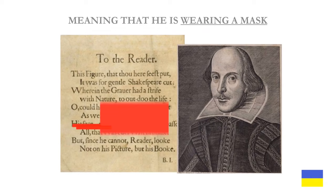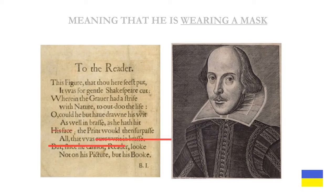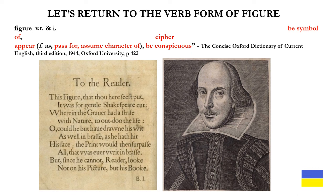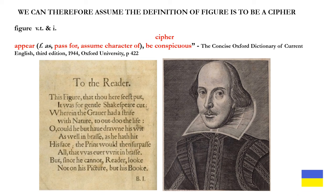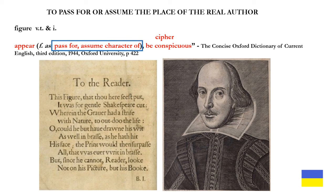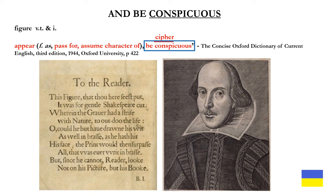This is the first sign of deception in the front matter, meaning the figure is wearing a mask. Returning to the verb form — is the figure a symbol of, a cipher, does it pass for, or assume the character of the real author? We can therefore assume the definition of figure is to be a cipher, to pass for, or assume the place of the real author — and be conspicuous. In all of Elizabethan and early Jacobean printing, there is never a portrait like this one for any book published within 200 years.